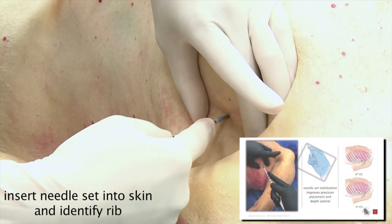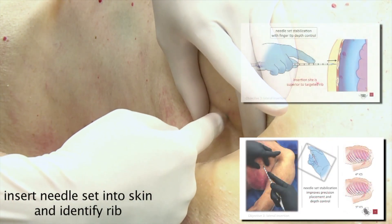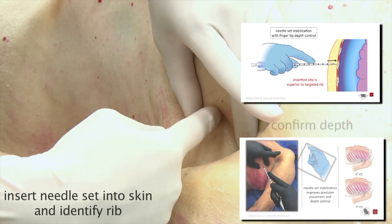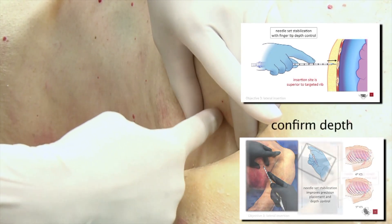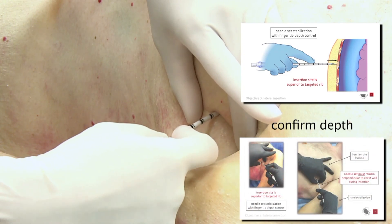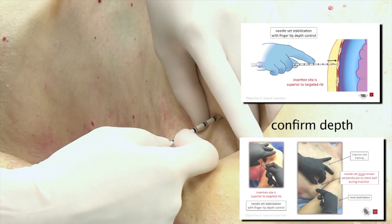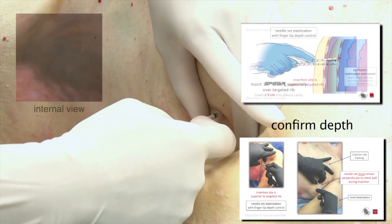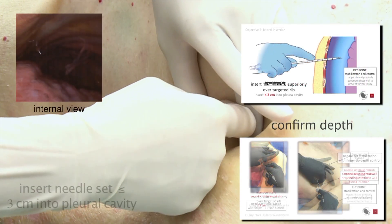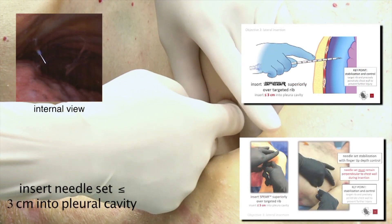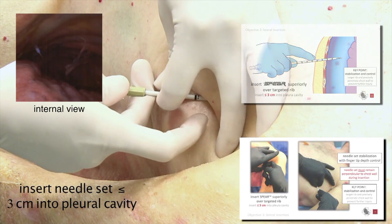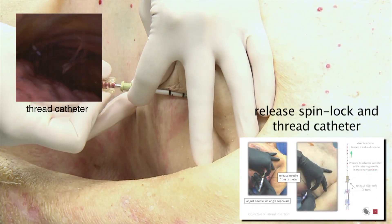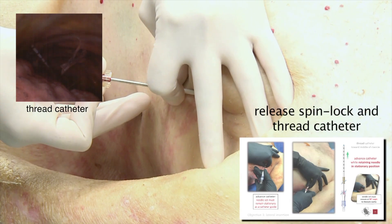Insert needle set into skin and identify rib. Confirm depth. Insert needle set less than or equal to three centimeters into pleural cavity. Release spin lock and thread catheter over the rib.